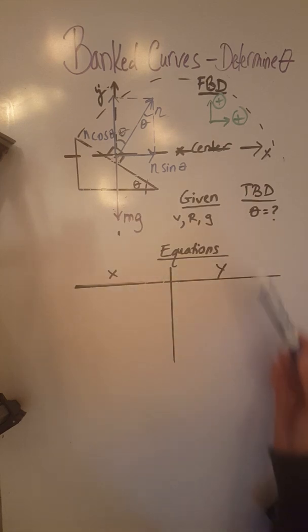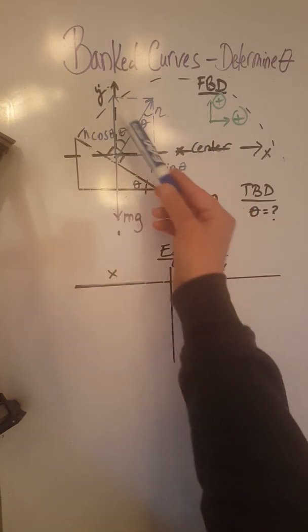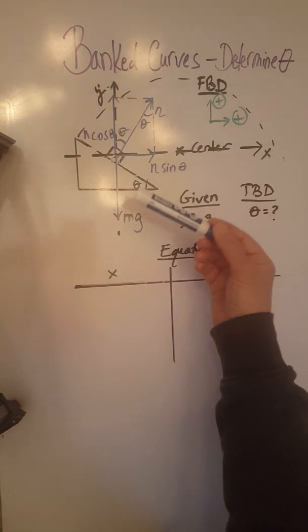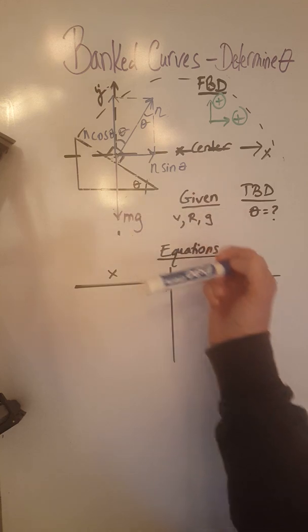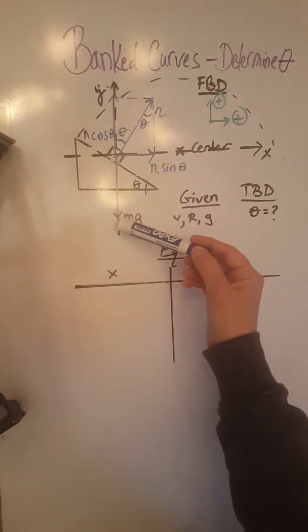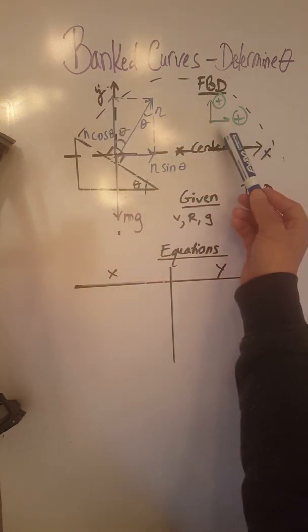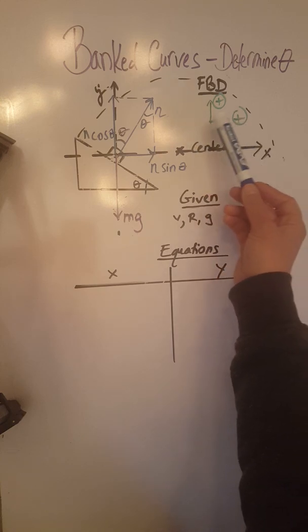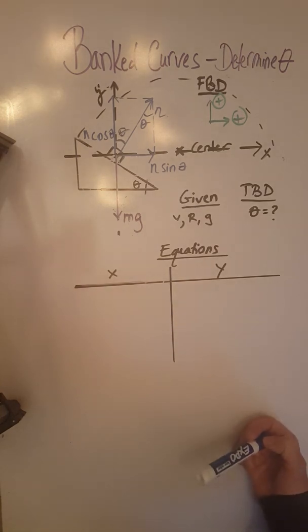Now the first thing we have to do once we finish the free body diagram and do the magnitude check, remember we checked that mg is equal in magnitude to n cosine theta because those forces must be balanced, is to pick our positive direction and I pick to the right for x to be positive and up for y to be positive.